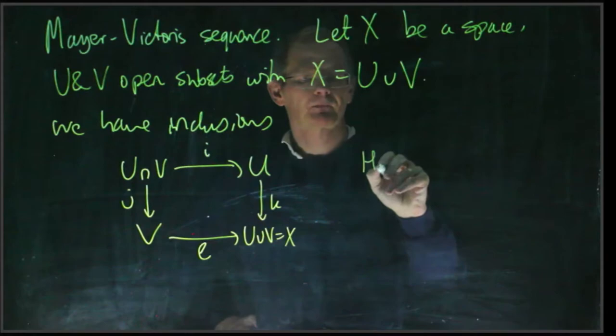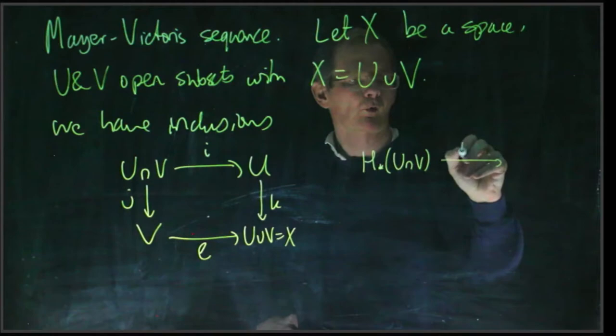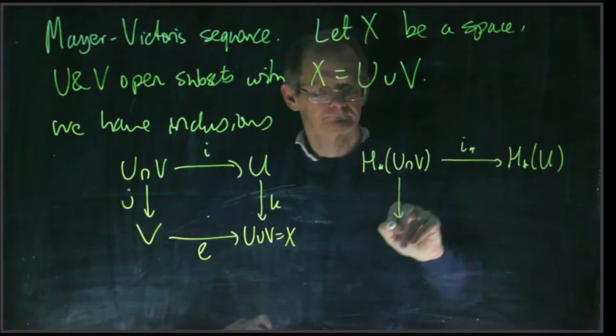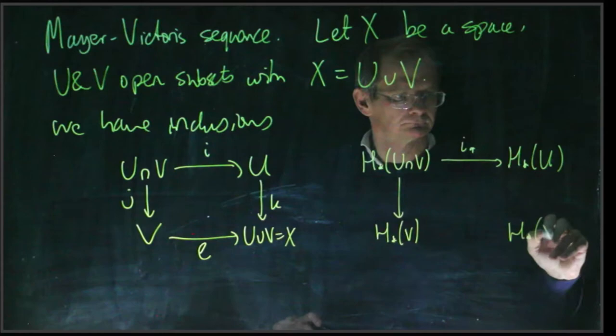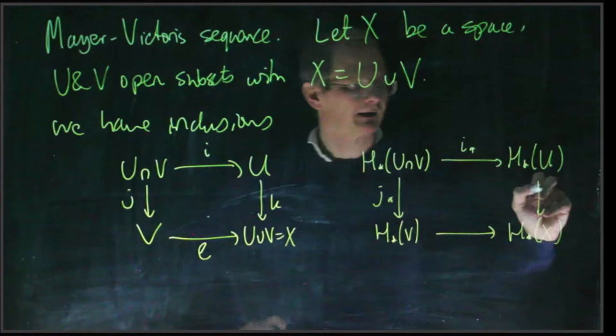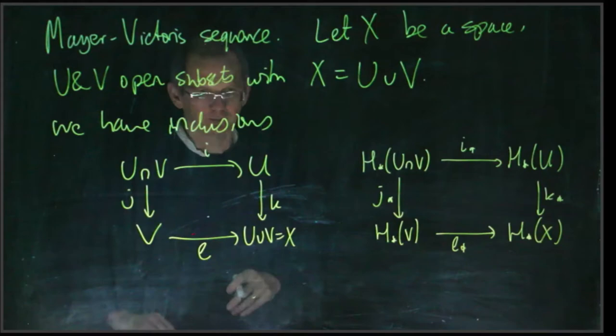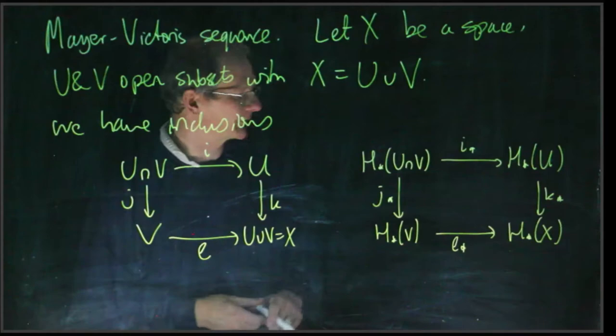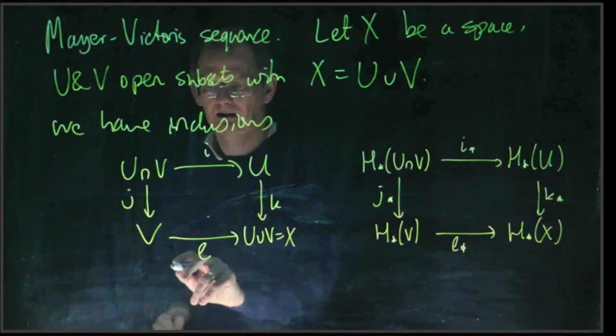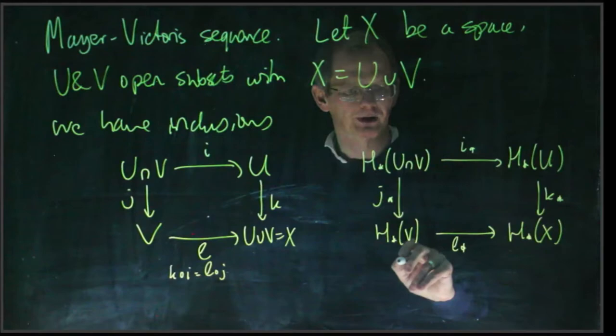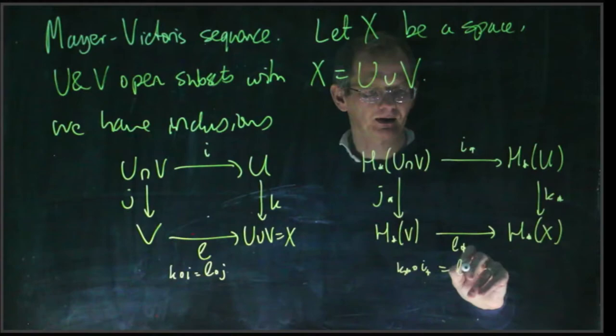From these inclusions we get maps of homology groups: i lower star, j lower star, k lower star, l lower star. This diagram obviously commutes, these are basically just identity maps, so everything's the same. And because k composed of i is the same as l composed of j, it follows by functoriality that k star composed of i star is l star composed of j star.